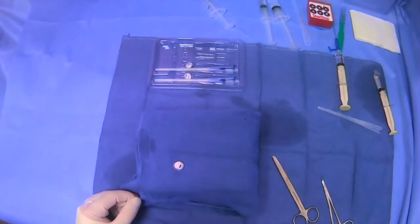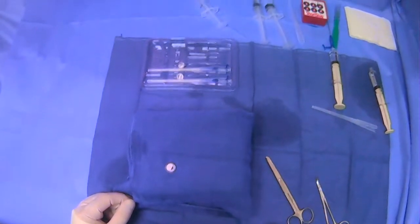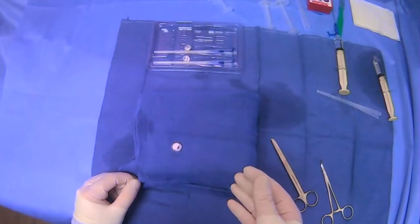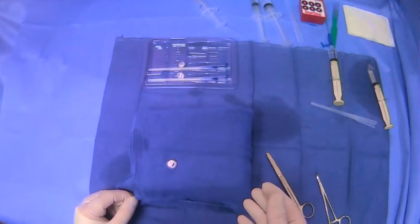One thing that's important to discuss when discussing these T-fasteners is also their removal. These are placed during the case when we're putting in our gastric tube.